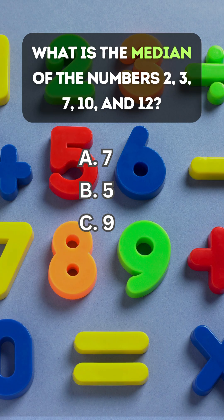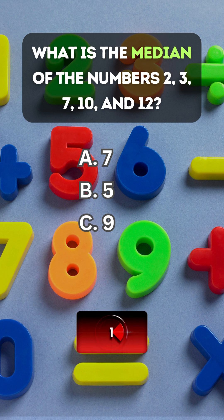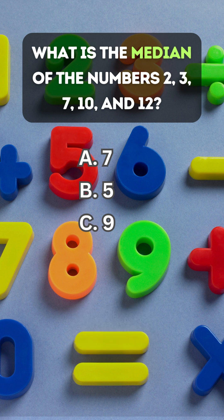What is the median of the numbers 2, 3, 7, 10, and 12? Answer A. 7.